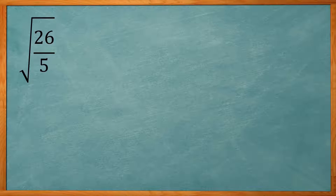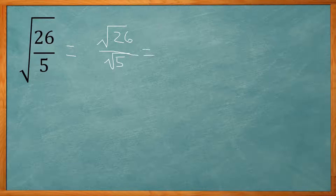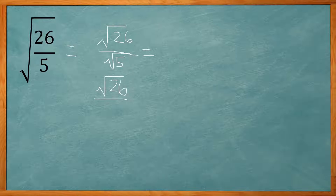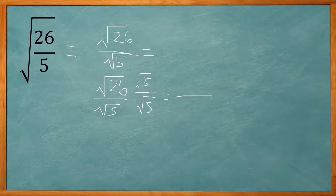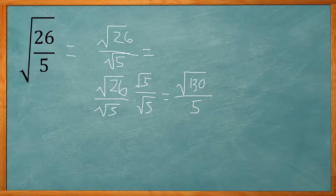Now this is a similar example, but we have a fraction underneath the radical. This can be rewritten as square root of 26 over the square root of 5. Again, we want to rationalize the denominator, so we're going to multiply the top and bottom by square root of 5. Square root of 5 times square root of 5 on the bottom gives us just 5. On the top, we multiply 26 times 5 to get the square root of 130. And just like that, we have rationalized the denominator — so the square root of 26 over 5 becomes the square root of 130 over 5.